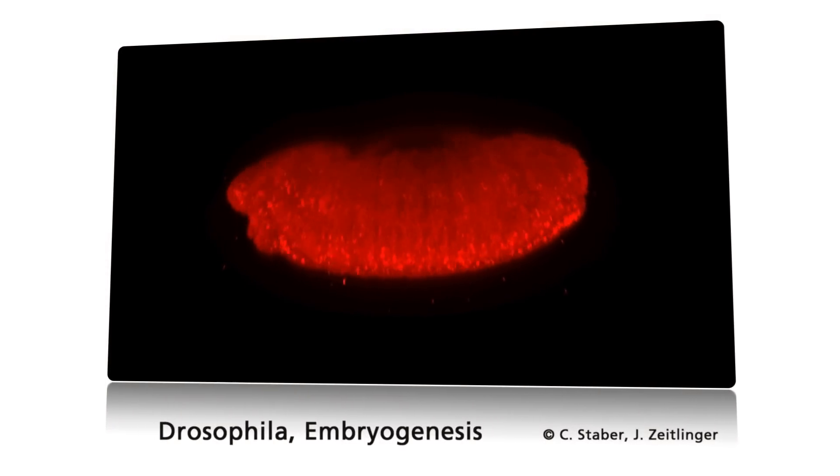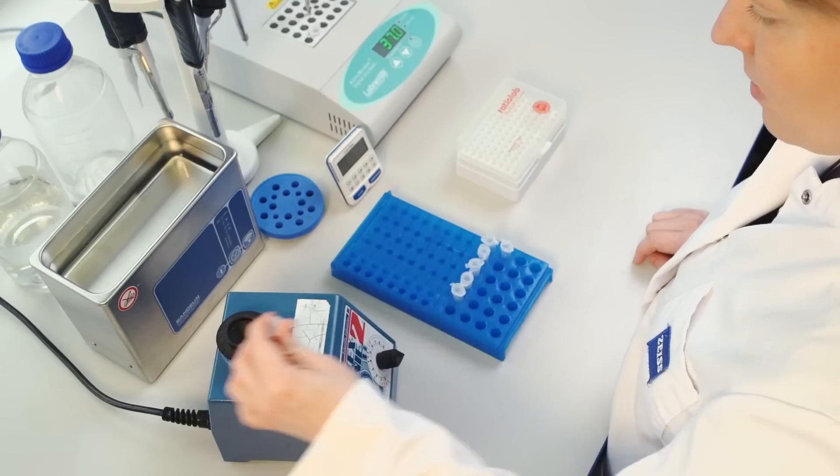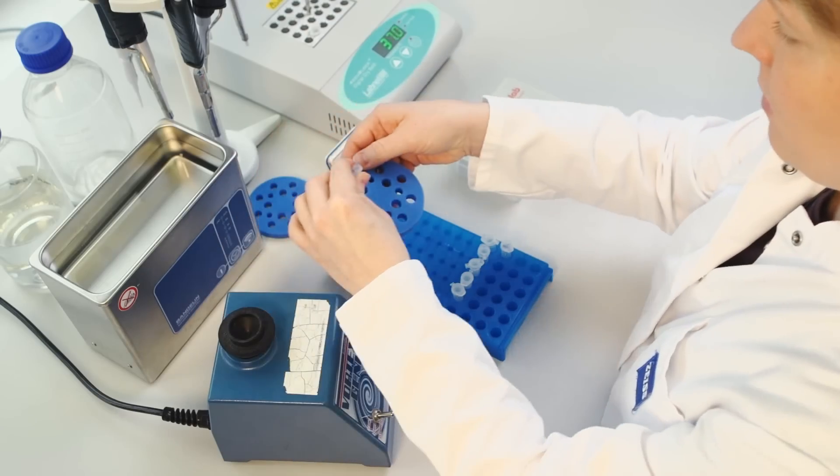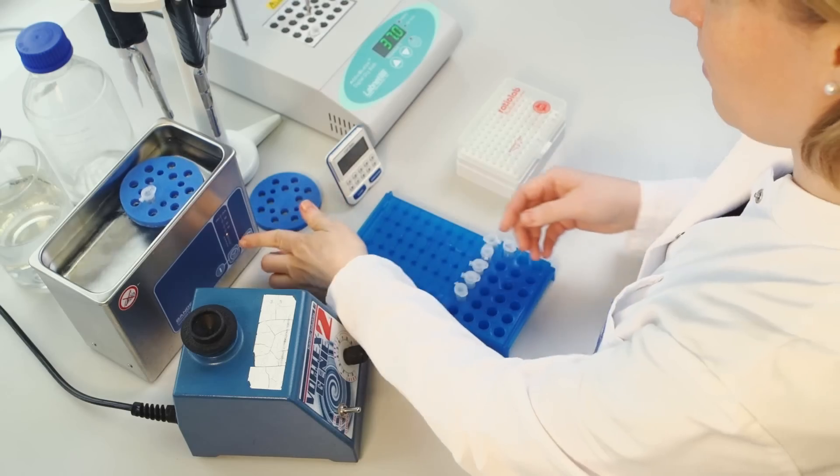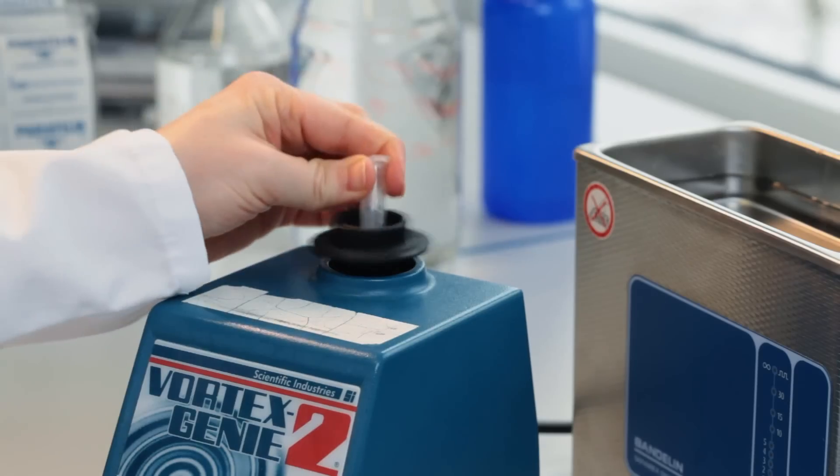Fluorescent beads will serve as fiducials for later multi-view alignment. Simply mix them with the medium by repeatedly vortexing and sonicating. Then add them to the agarose and vortex again.